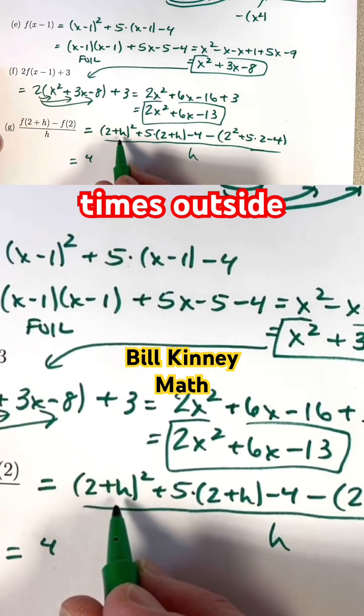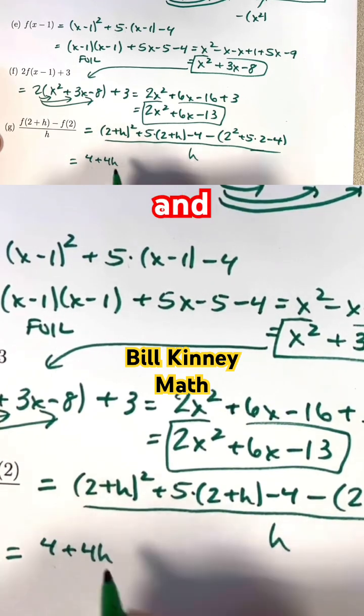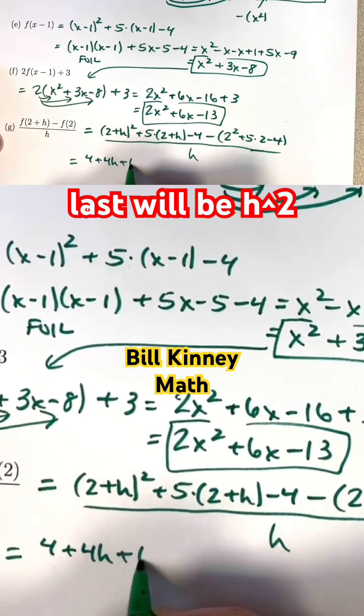Outside times outside and inside times inside are both 2h. Combine those, you get a plus 4h. And last times last will be h squared.